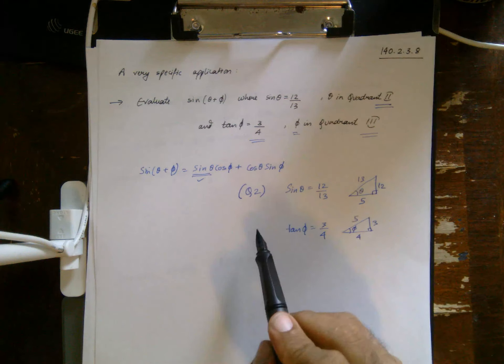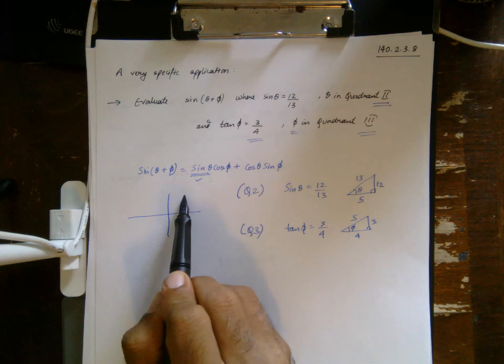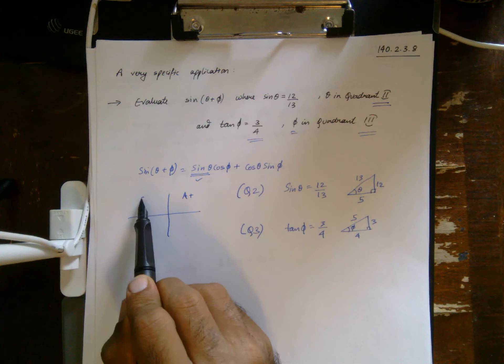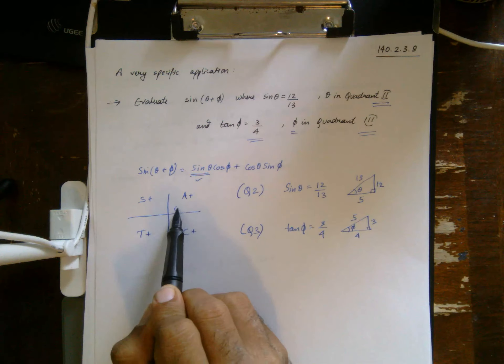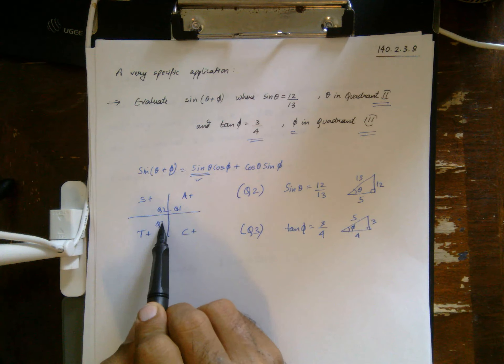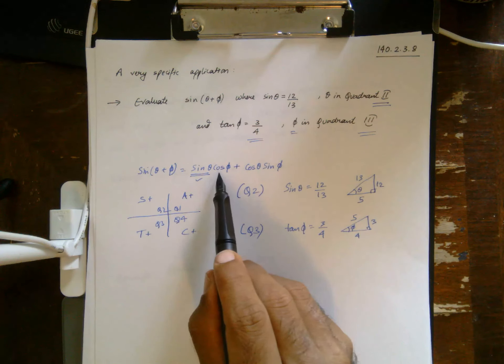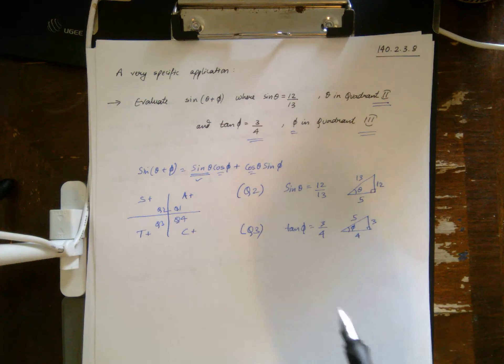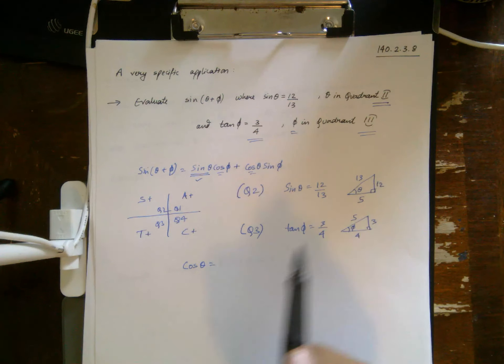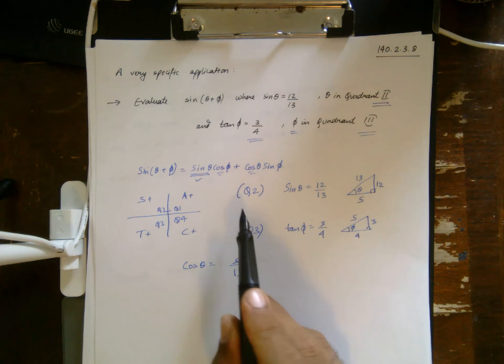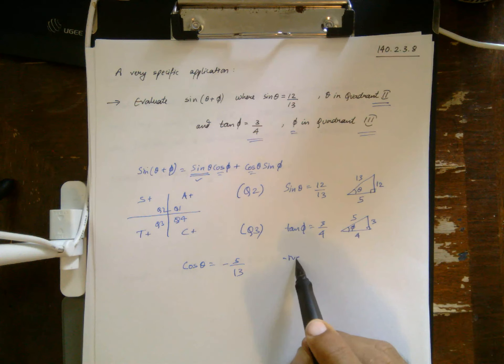Now an important thing to remember here is that they also give you some information about the quadrant. In the quadrant it's all positive: A-S-T-C, quadrant 1, quadrant 2, quadrant 3, and quadrant 4. Now what do we need? We need cosine phi and cosine theta. So cosine theta from the triangle is adjacent over hypotenuse. Quadrant 2 means that it is negative.